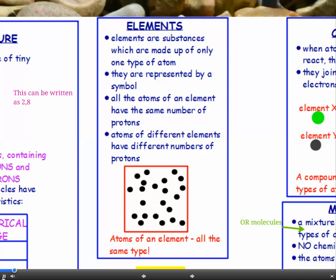Elements. Now, the definition of an element is a substance which is made up of only one type of atom. And each element is represented by a symbol. All the atoms of an element have the same number of protons, but atoms of different elements have different numbers of protons. So you look at the diagram there, all those atoms are the same type, so what we've got there is an element.